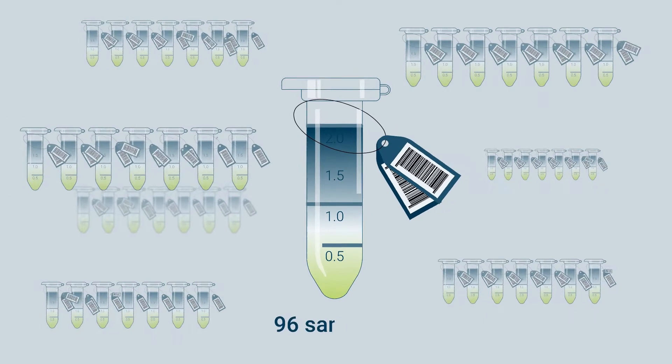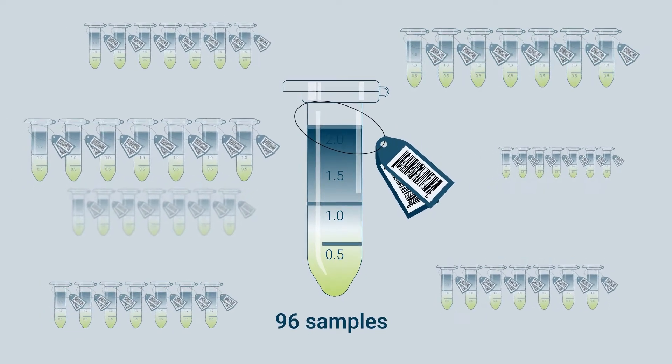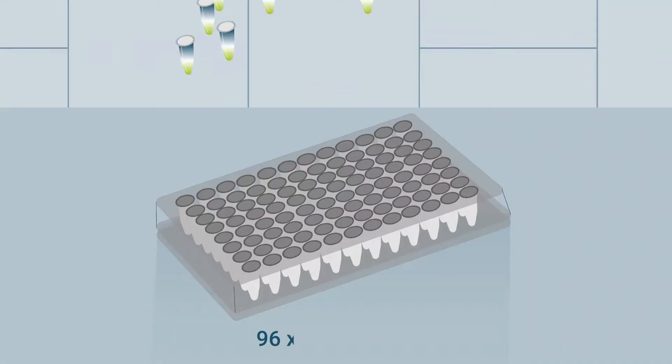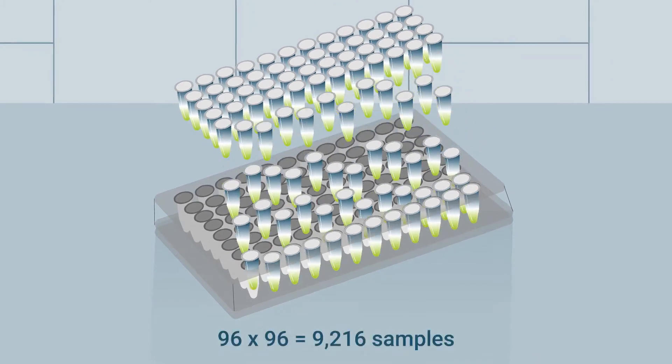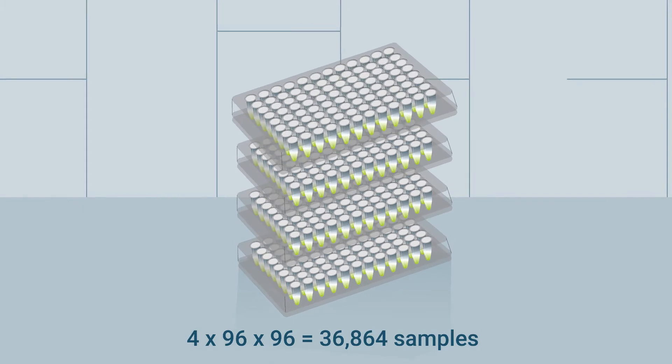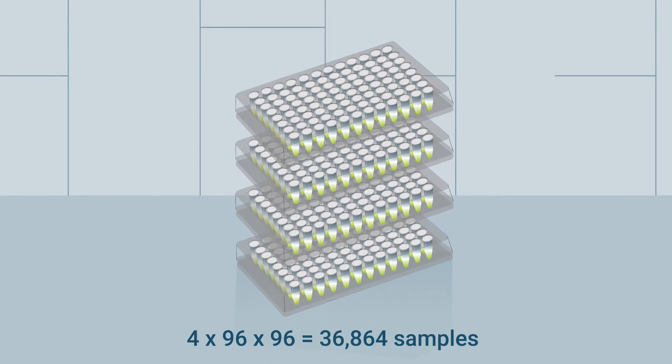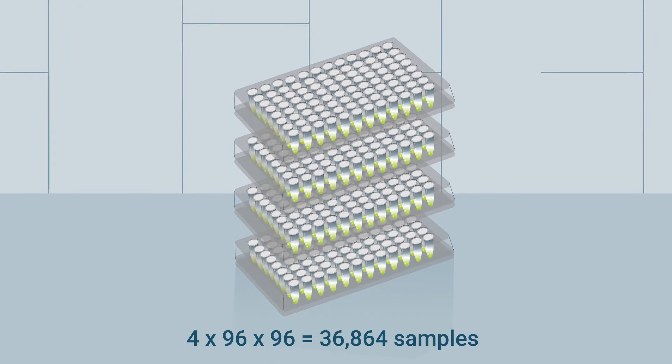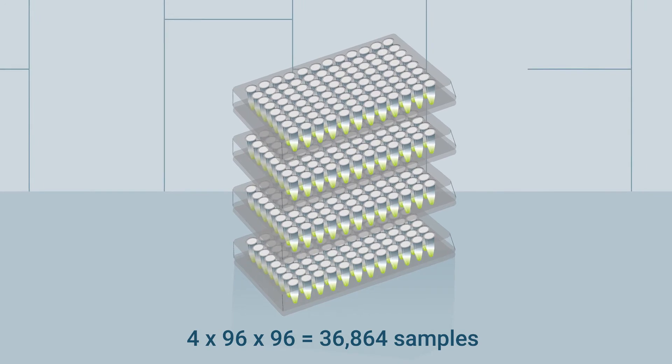Each pool of up to 96 samples can be additionally labeled with unique dual indices which allows multiplexing of several pools. With up to 384 UDIs, this enables simultaneous analysis of up to 36,864 samples.